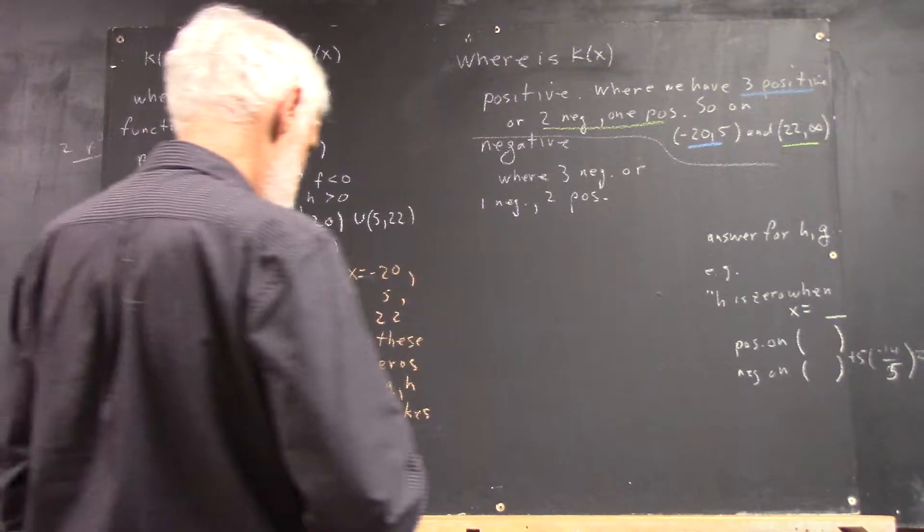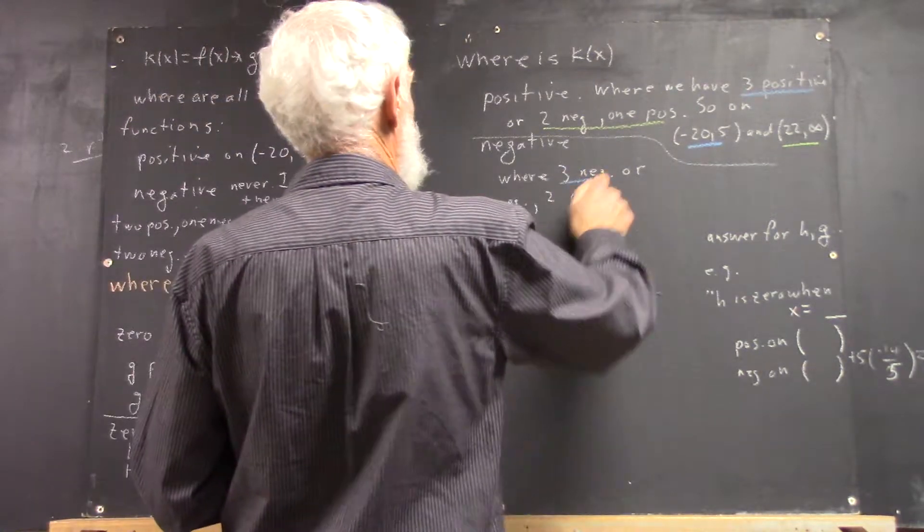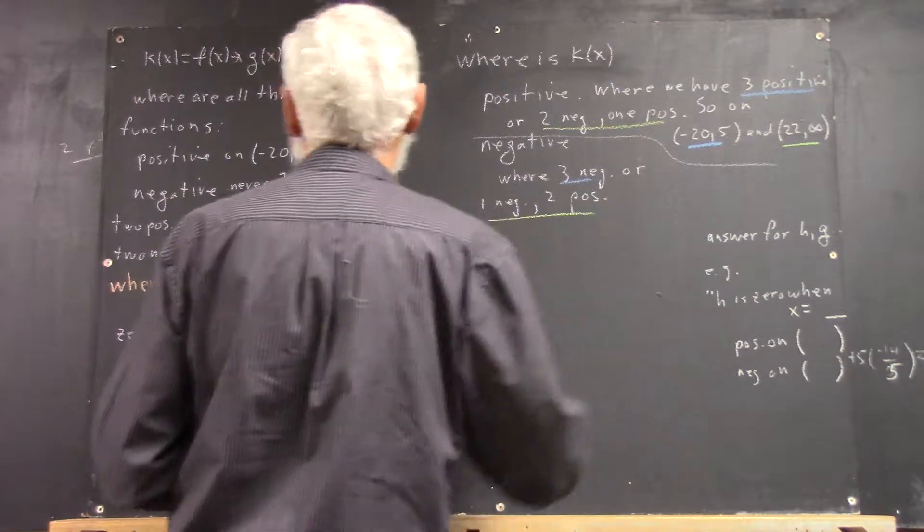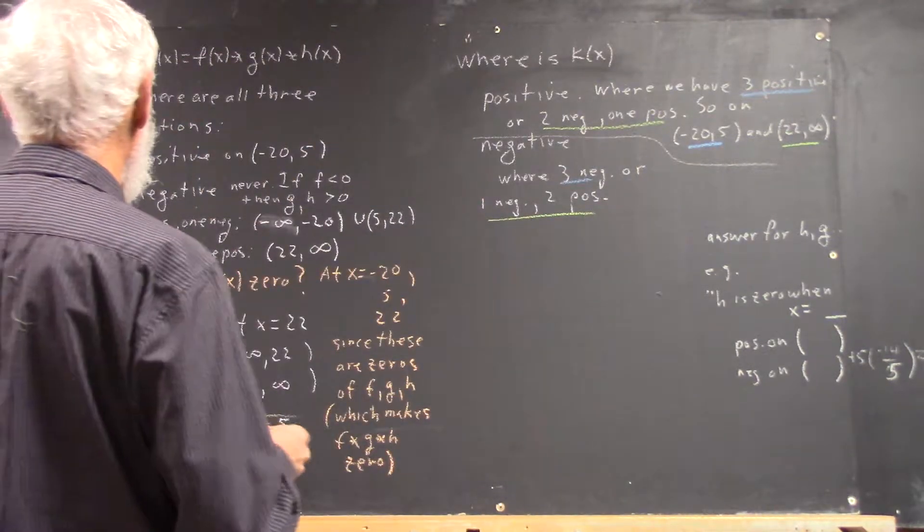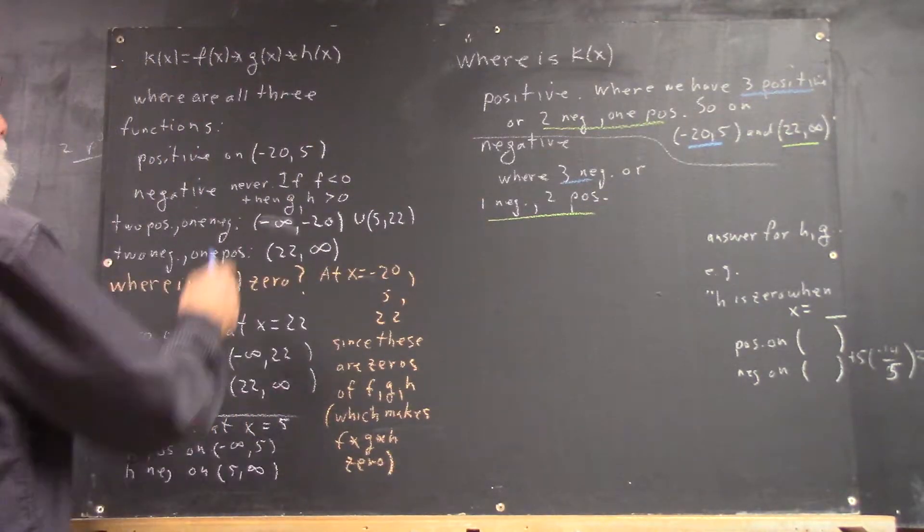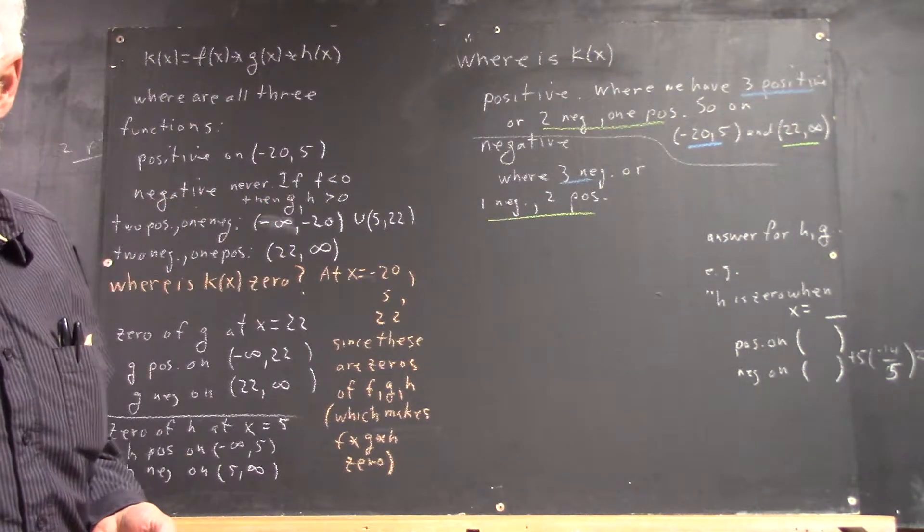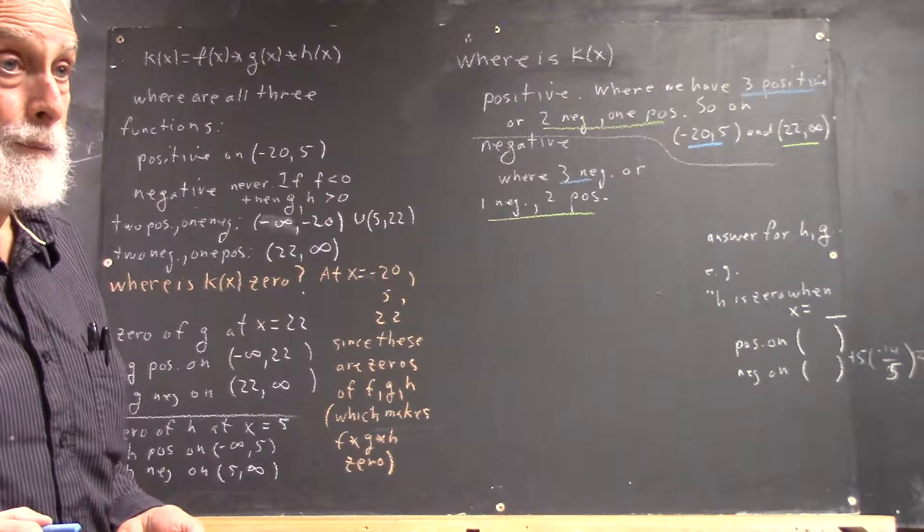Okay, well, let's see. Three negative, one negative, two positive. Let's see. Three negatives means all of them are negative, and that never happens, right?